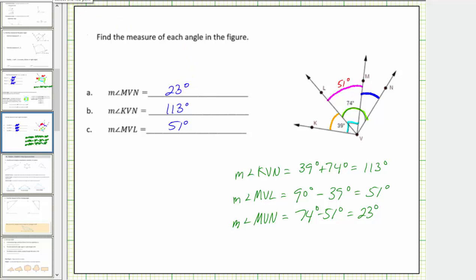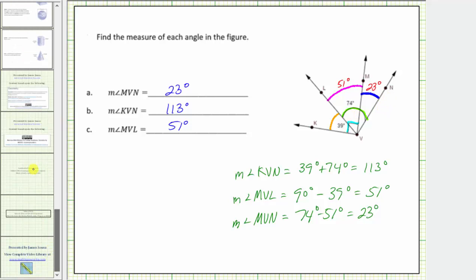Let's label this and check our work. If this angle is 23 degrees, notice how 23 degrees plus 51 degrees equals 74 degrees, which is the measure of angle LVN. Therefore our work is correct. I hope you found this helpful.